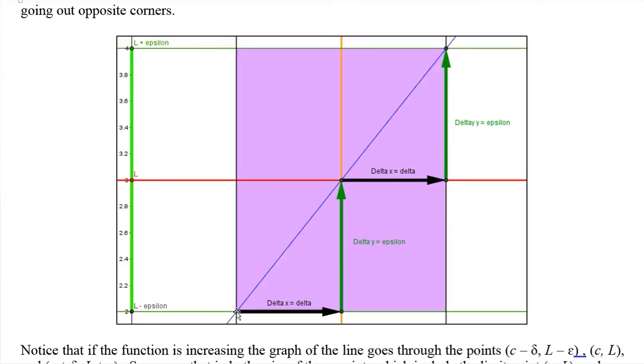So what are these points? Well, since this is an increasing function, it's going to go from corner to corner on our box if we have our delta set at exactly the right spot so that all of the y values are between L minus epsilon and L plus epsilon for all the x values between c minus delta and c plus delta. And we want the largest such delta for that particular epsilon and that will make it go out the corners.